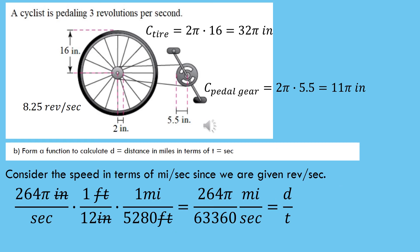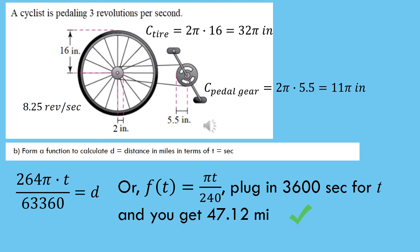If we instead want a function that gives us distance in terms of time, we go back to our speed in distance per second. We had already figured out that the bicycle was moving at 264 pi over 63,360 miles per second — distance in the numerator and time in seconds in the denominator. Just like before, we solve for d by multiplying both sides by t, giving us 264 pi times t over 63,360. Since 264 divides evenly into 63,360, the function simplifies to f(t) = pi times t over 240.